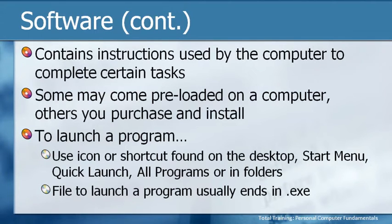Regardless of which program you're using, there are several ways to launch them on a PC. There may be an icon or shortcut on the desktop, or you can find it in the Start menu, or go to All Programs. If you're using Windows Vista, Windows 7, or Windows XP, you may have the Quick Launch bar next to the Start button for frequently used programs. In Vista and Windows 7 you can also search quickly by typing all or part of the program name.